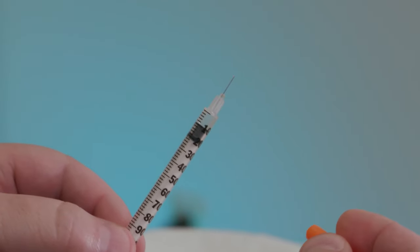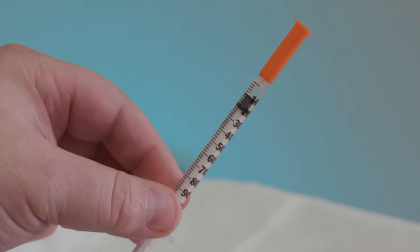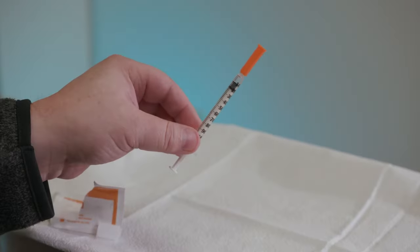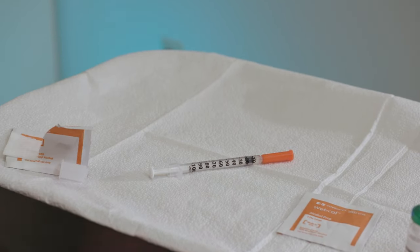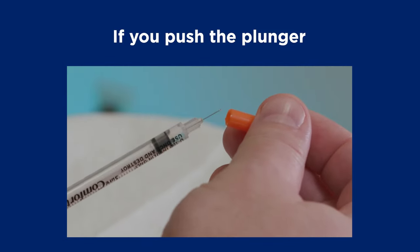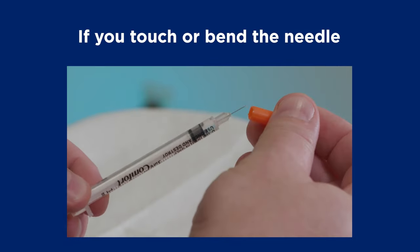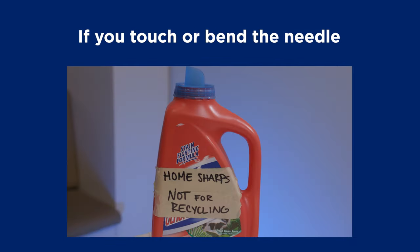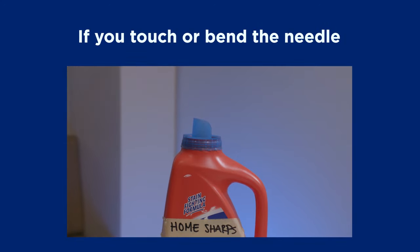Put the cap back on the syringe without pushing the plunger or touching or bending the needle. Set the capped syringe down. If you push the plunger, you may need to draw up more medication to make sure you're getting the right dose. If you touch or bend the needle, you'll need to put the syringe in your sharps container and start over with a new one.